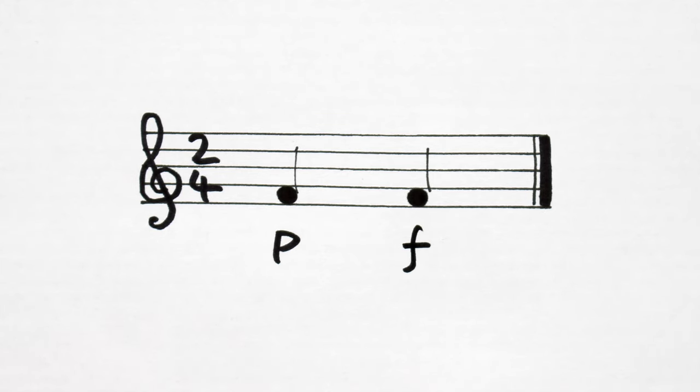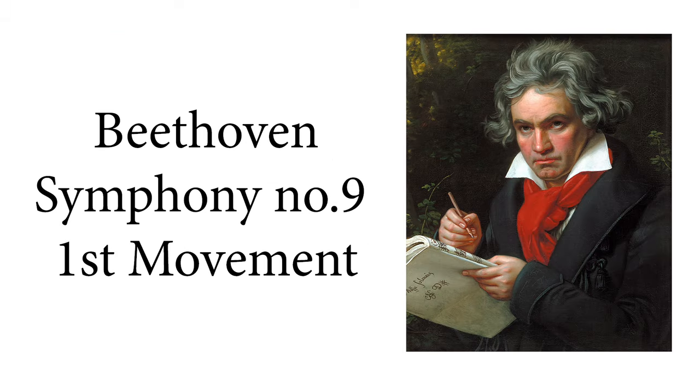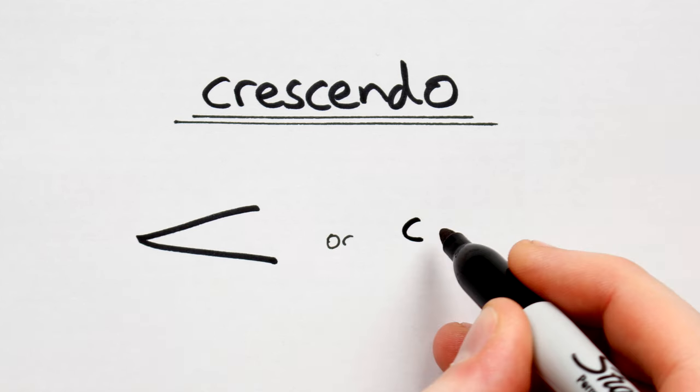Now, jumping from piano to forte produces a cool effect, but sometimes a gradual change in volume is needed. A gradual increase in volume over time is called a crescendo, notated like this or this.